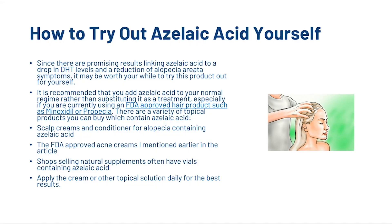So how can you try azelaic acid out for yourself? Since there are promising results linking azelaic acid to a drop in DHT levels and a reduction of alopecia areata symptoms, it may be worth your while to try this product. It is recommended that you add azelaic acid to your normal regime rather than substituting it as a treatment, especially if you're currently using an FDA-approved hair product such as Minoxidil or Propecia. There are a variety of topical products you can buy containing azelaic acid, including scalp creams, conditioners, the FDA-approved acne creams mentioned earlier, and natural supplement vials. Apply the cream or other topical solution daily for best results.